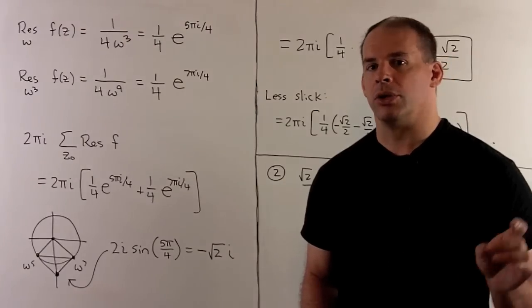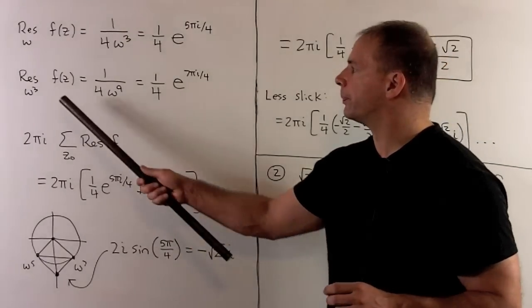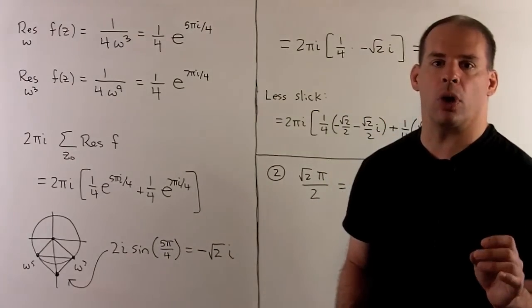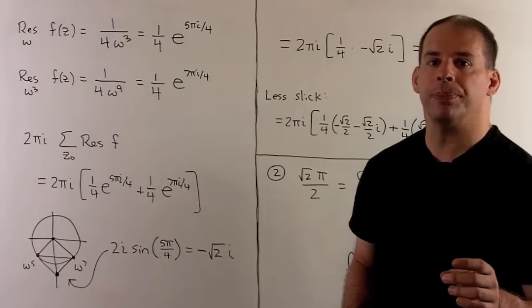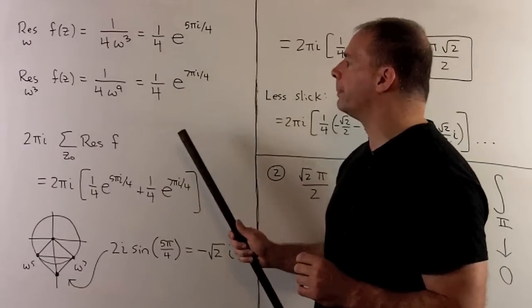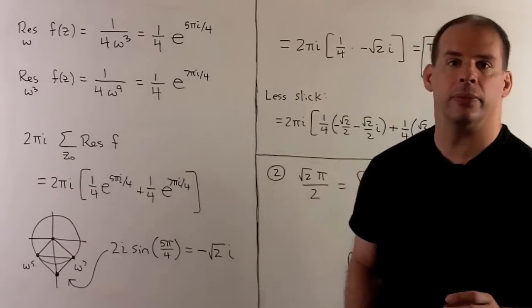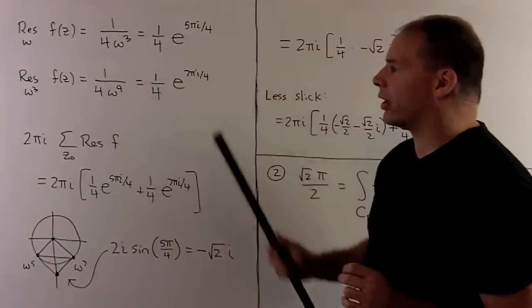In a similar manner, we could use L'Hôpital's rule to get the residue at omega cubed. That's going to be 1 over 4 omega to the ninth power. If we put these in polar form, we have 1 fourth e to the minus 3 pi i over 4, or equivalently e to the 5 pi over 4, and 1 fourth e to the 7 pi over 4.